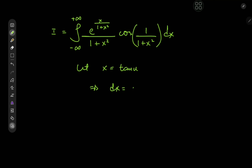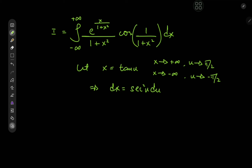That means dx equals secant squared u du. And as x approaches positive infinity, u, which would be the inverse tangent of x, would approach π/2. And as x approaches negative infinity, u will approach negative π/2.